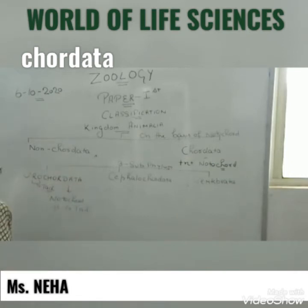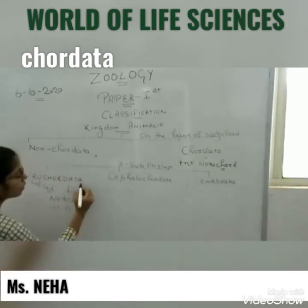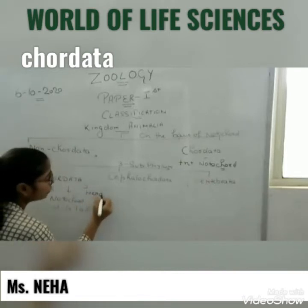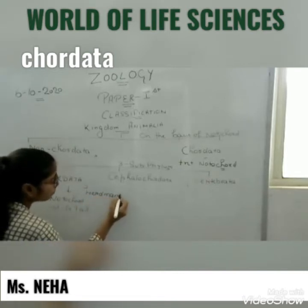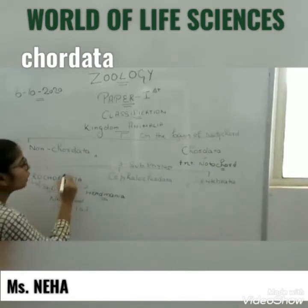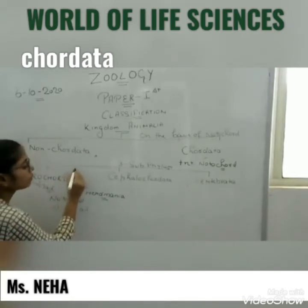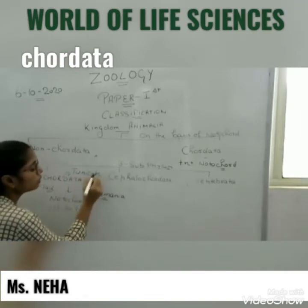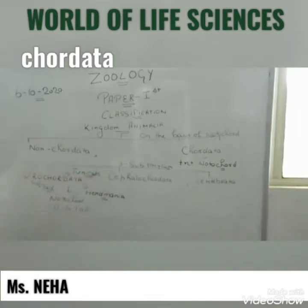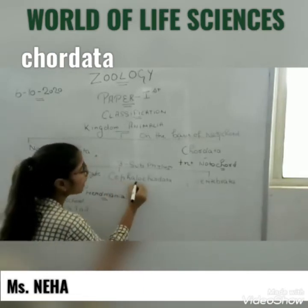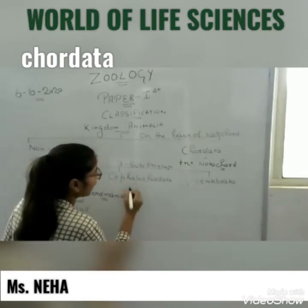The example of Urochordata is Herdmania. Urochordata is also known as Tunicates.